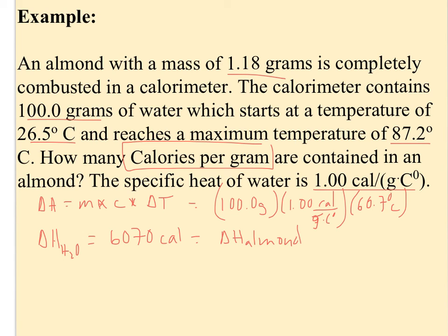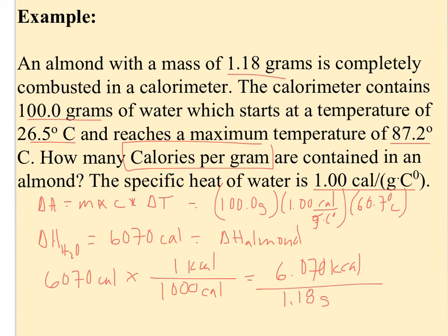Finding calories per gram is simpler than finding the specific heat of our metal in the previous problem. I can take 6,070 calories and change it to kilocalories because 1 kilocalorie equals 1,000 small calories. So this is really 6.070 kilocalories. I simply divide by the mass of my sample, 1.18 grams, and I come up with 5.14 calories per gram in an almond. That's what the information on the nutrition label is telling you - someone has actually put that food in a calorimeter and come up with this value.